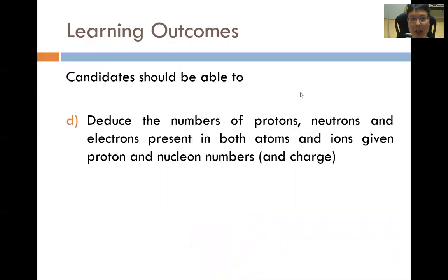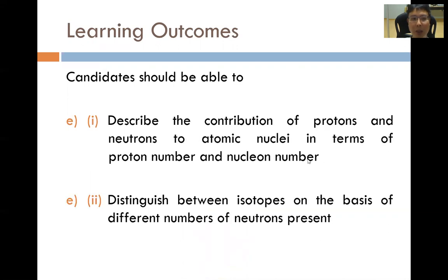As a short recap, learning outcome D says that candidates should be able to deduce the numbers of protons, neutrons, and electrons present in both atoms and ions, given proton and nuclear numbers as well as the charge if it was an ion in the question. Learning outcome E part 1, on the other hand, candidates should be able to describe the contribution of protons and neutrons to atomic nuclei in terms of proton number and nuclear number.